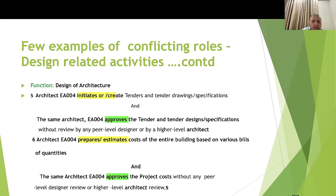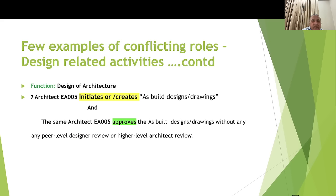Example six: Designer number four prepares and estimates the cost of the entire building based on various bills of quantities, and approves the project cost without any peer review or inputs from the finance team or any other project team.